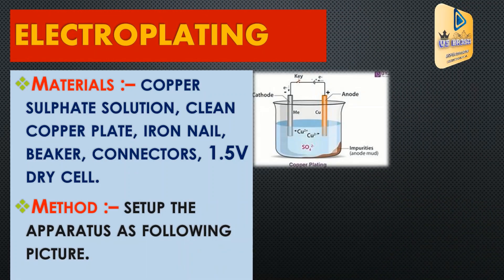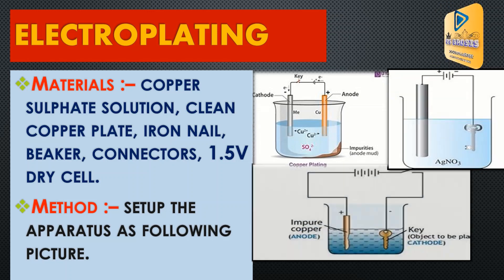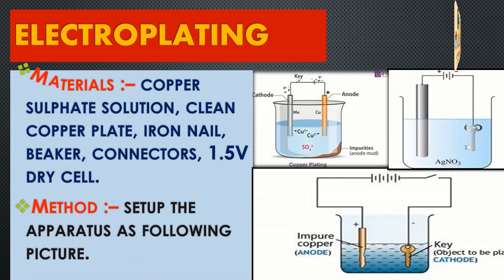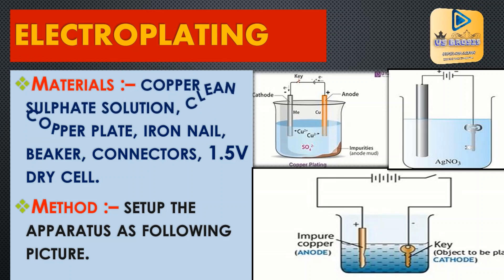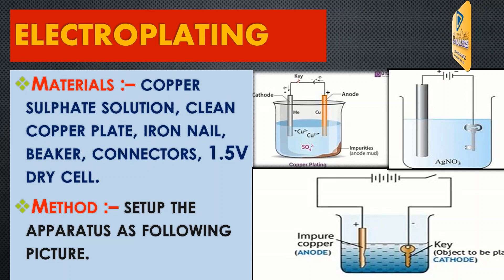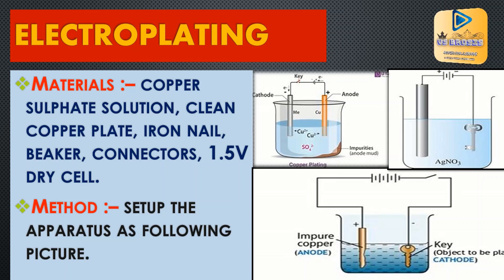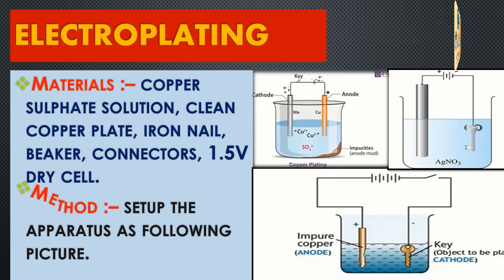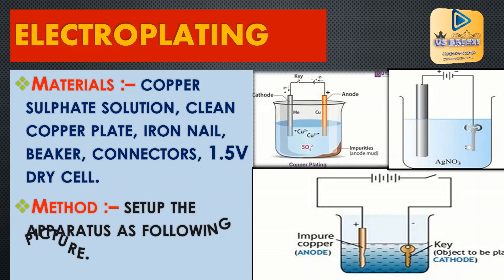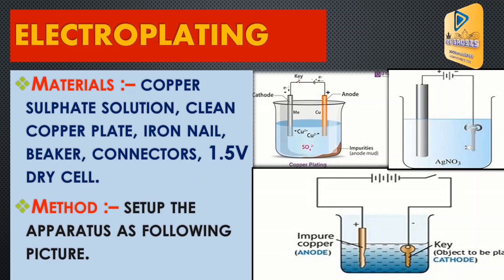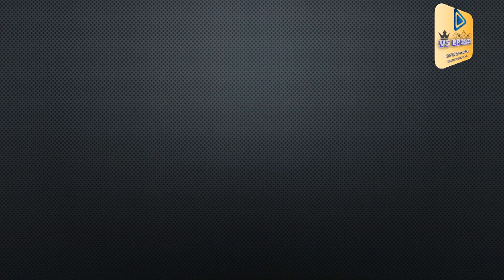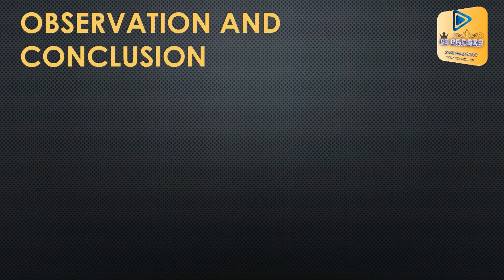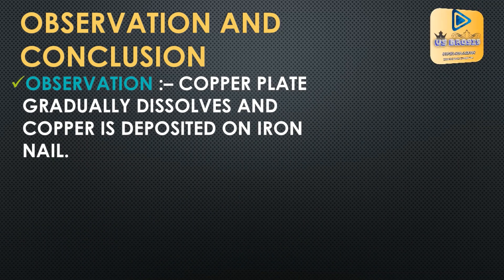Now we consider how to do electroplating. You need copper sulphate solution, a clean copper plate, iron nails, a beaker, connectors, and 1.5V dry cells. Set up the apparatus as shown in the figure. You can observe the copper plate gradually dissolving and copper being deposited on the iron nails.